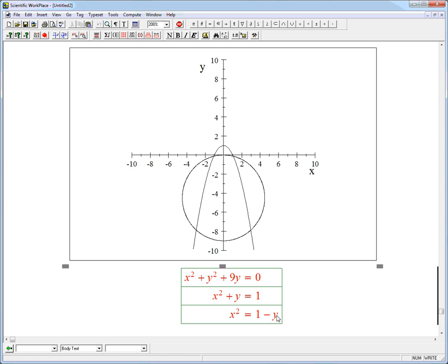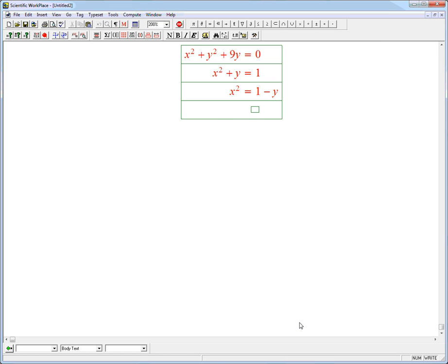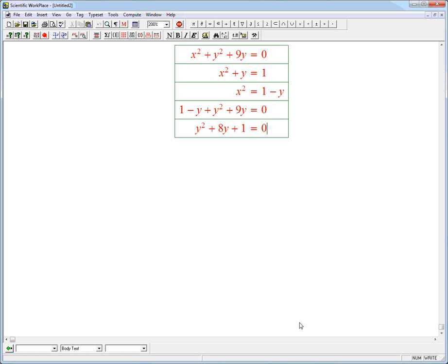Again, if I put y, I solve for y here, I'd get kind of a messy thing in terms of x squared. It wouldn't be horrible, but it'd be messy. Again, it's smarter to realize x squared only appears here, and I'm going to get still a quadratic in y if I just plug that in. So that's going to be 1 minus y plus y squared plus 9y equals 0. Y squared plus 8y plus 1 equals 0.